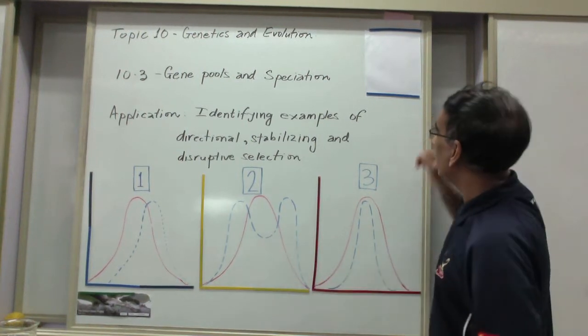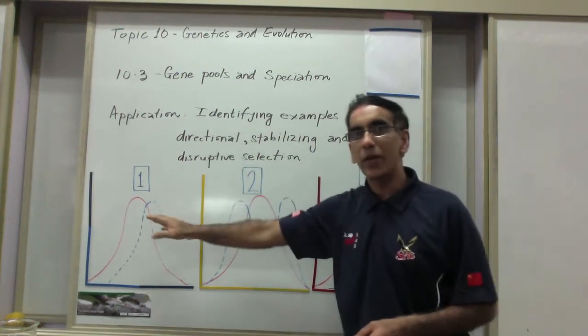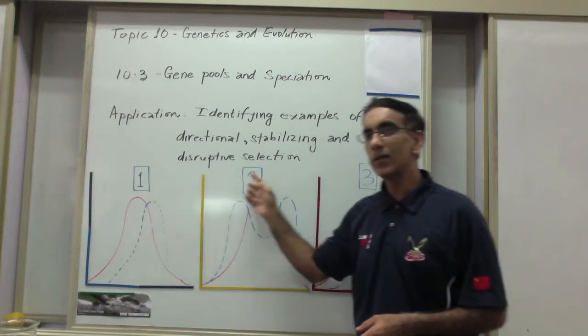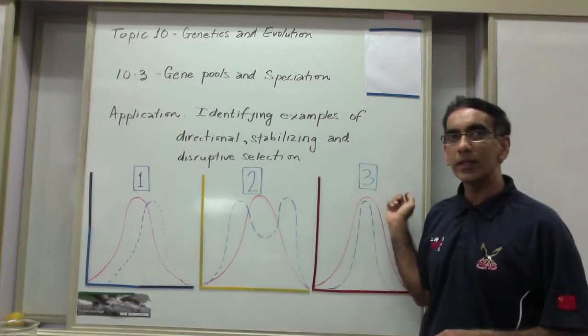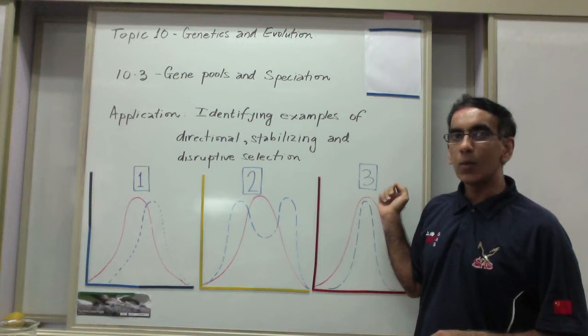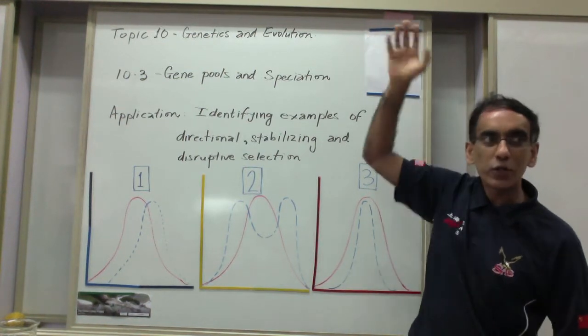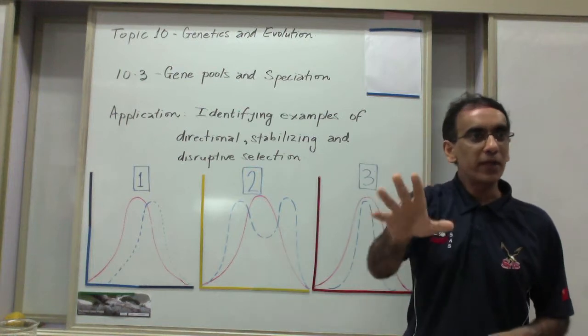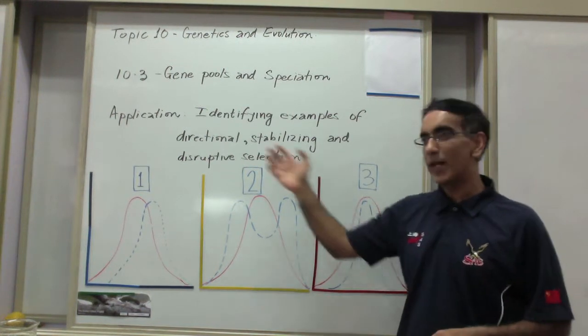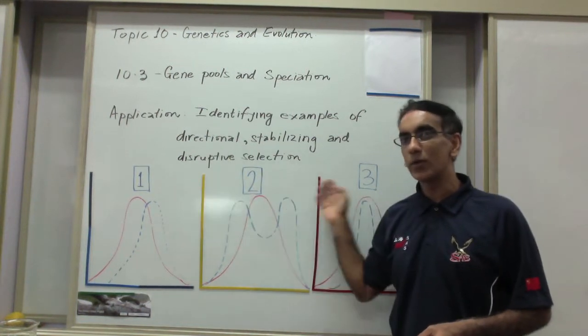Right now we are going to call each of these diagrams one, two, and three. When I remove one of the magic words from up here and I show it to you, by a show of fingers you will tell me if it matches to one, two, or three.